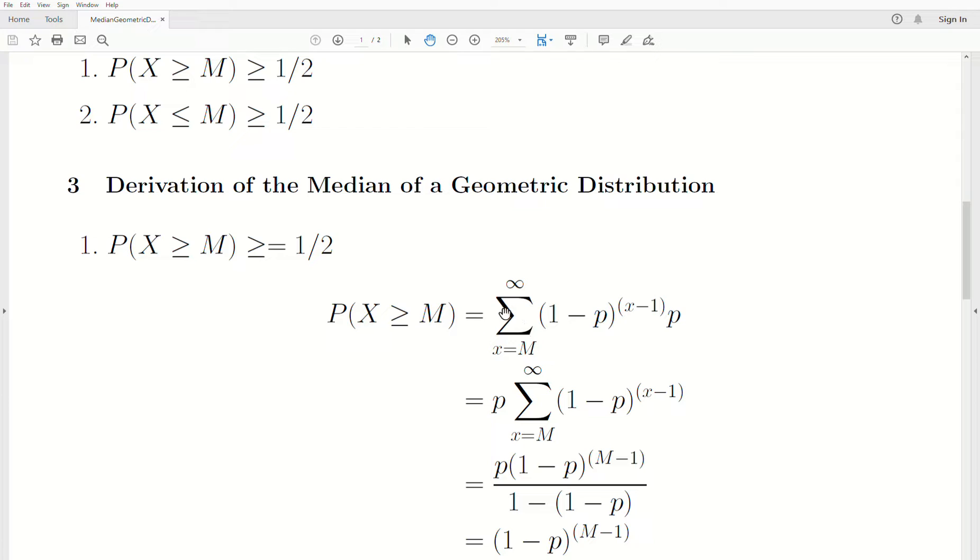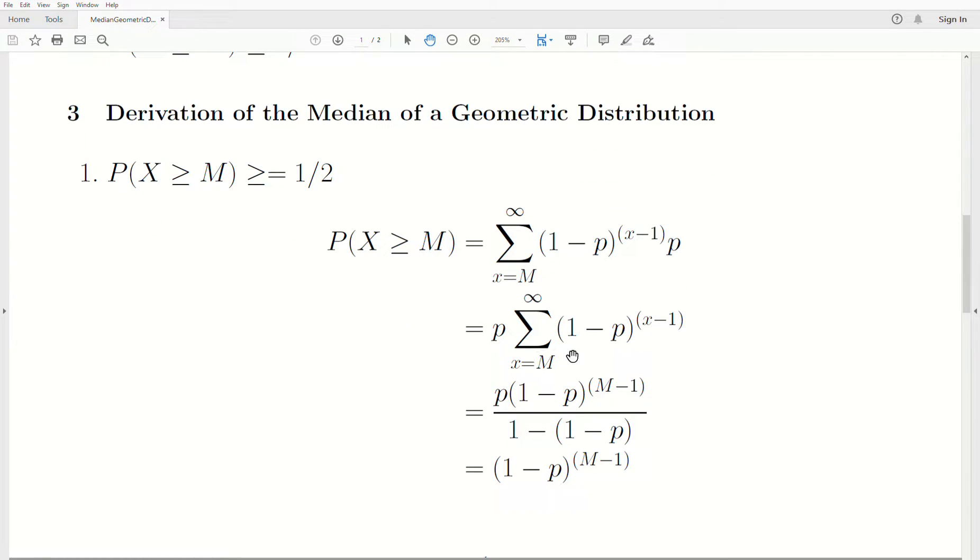P is not part of the index, we take it out front. This is a geometric series that starts at M or M minus one, and there's a distinct formula for that. There's plenty of videos and websites that have that formula, but this is it. The denominator is just p and that cancels and we're left with this.